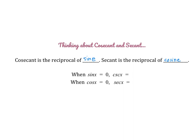Building off these two facts, we know that when the sine of x equals 0, cosecant must be undefined. And likewise, when the cosine of x equals 0, the secant of x is also undefined, because the reciprocal of 0 is 1 over 0, which is undefined. That means both cosecant and secant will have vertical asymptotes, occurring whenever our sine or cosine graphs are equal to 0.